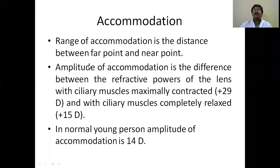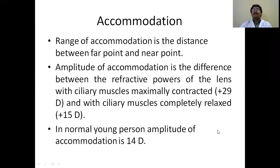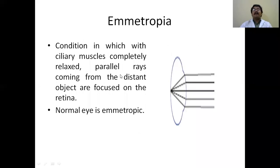The range of accommodation is the distance between the far point (6 meters) and the near point (25 cm). The amplitude of accommodation is the difference in refractive power of the lens between maximal ciliary muscle contraction (29 diopters) and complete relaxation (15 diopters) — giving a young person an amplitude of 14 diopters. This amplitude decreases with age, approaching near zero in presbyopia at age 70.